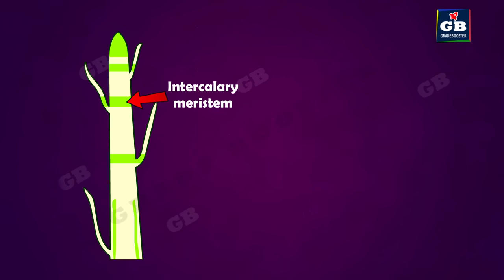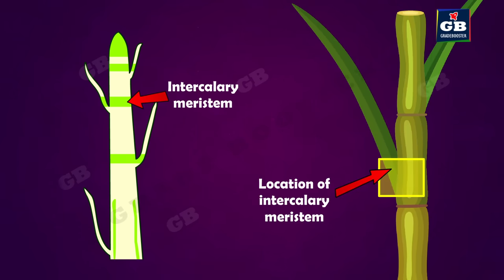The third one is intercalary meristem. This meristem is mostly found in monocot plants like grass. Intercalary meristems are found at the base of the leaf and at the node.